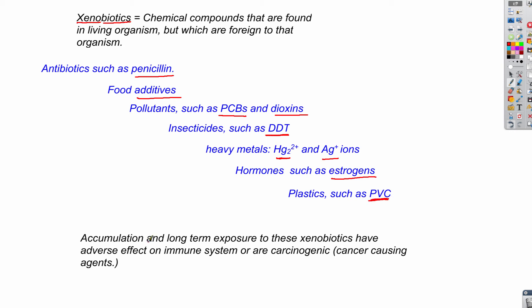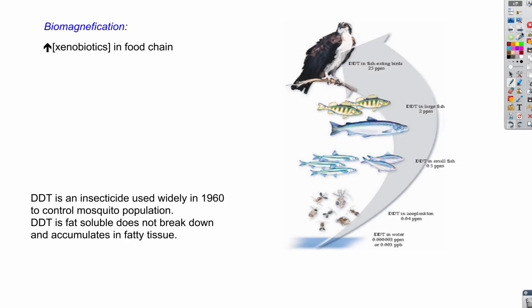When they get accumulated in our system, long-term exposure to them causes cancer or deficiency in the immune system. The next item to know is biomagnification.